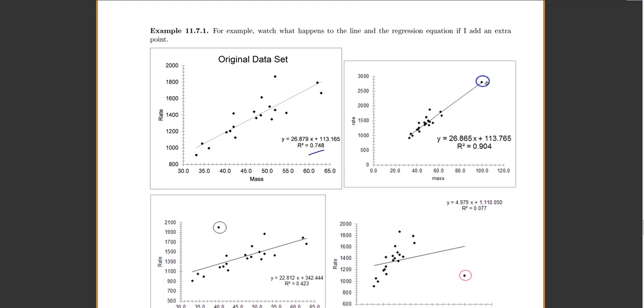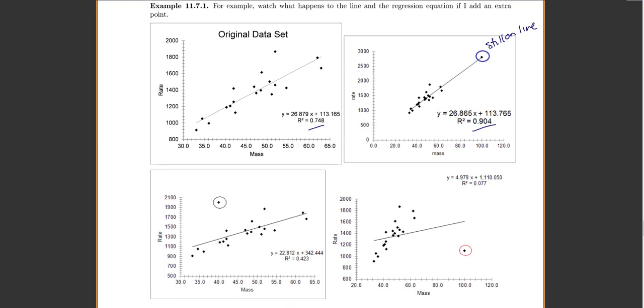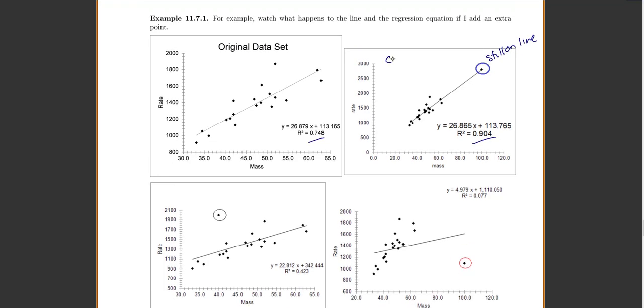Notice what happens if I add one point that's still on the line but far away. So this one is still on line, just far away. Notice the equation of my line didn't change very much. My slope is still 26.8, 26.8. My y-intercept is still 113, 113. My R squared actually got even higher on this one. But it's still on the line, doesn't really change yet. So this one is an outlier because it's far from the rest of the data, but it is not an influential point because it didn't change my line.